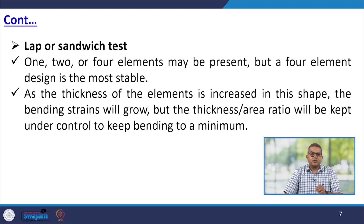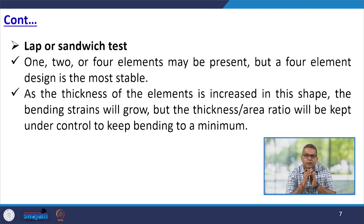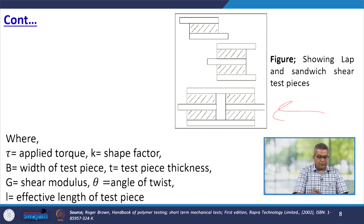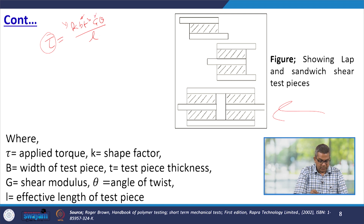Now let us talk about the lap or sandwich test. One, two, or four elements may be present, but the four-element design is the most stable one. As the thickness of the element is increased, the bending strain will grow, but the thickness-over-area ratio will be kept under control to keep bending to a minimum level. The figure shows the lap and sandwich shear test piece. The mathematical representation is tau equals K·B·T³·G·theta over L, where tau is the applied torque, K is the shape factor, B is the width of the test piece, T is the test piece thickness, G is the shear modulus, theta is the angle of test, and L is the effective length of the test piece.